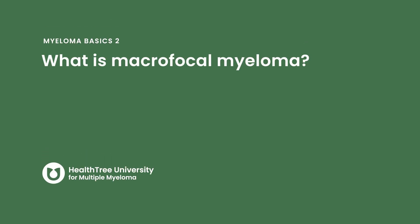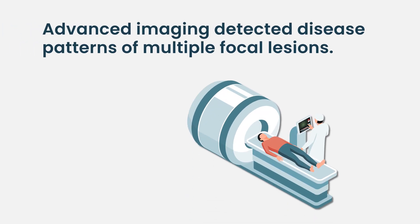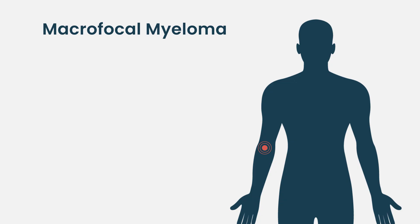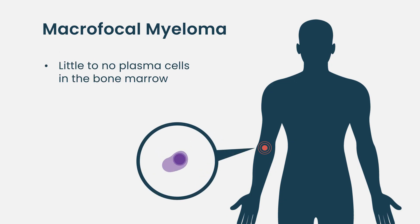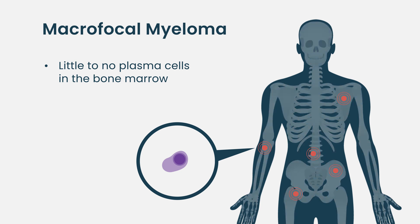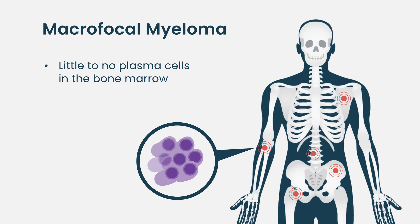Macrofocal myeloma is another very undefined area. The imaging modalities we started doing, like MRIs and PET scans, started to find a disease pattern that had not been defined before — a patient that has very few or no plasma cells in the bone marrow, but tumors scattered throughout the skeleton, usually formed of plasma cells, what's called plasmacytoma.